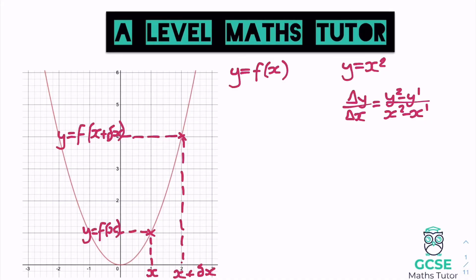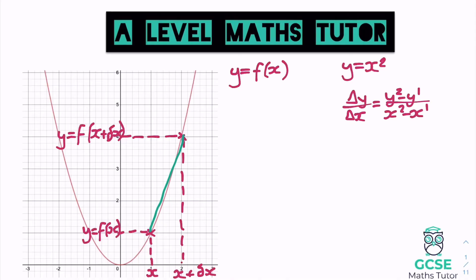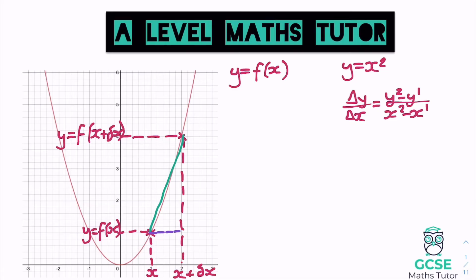Now, what we would normally work out at GCSE level is the gradient from one point to the other. But what we actually want is the gradient at one specific point — that first x coordinate — which has a very different gradient to the straight line between the two points. So let's draw the little triangle we would have drawn at GCSE to work out change in y over change in x. The change in x at the bottom is that movement in x which I've called delta x, and the change in y I'll call delta y.